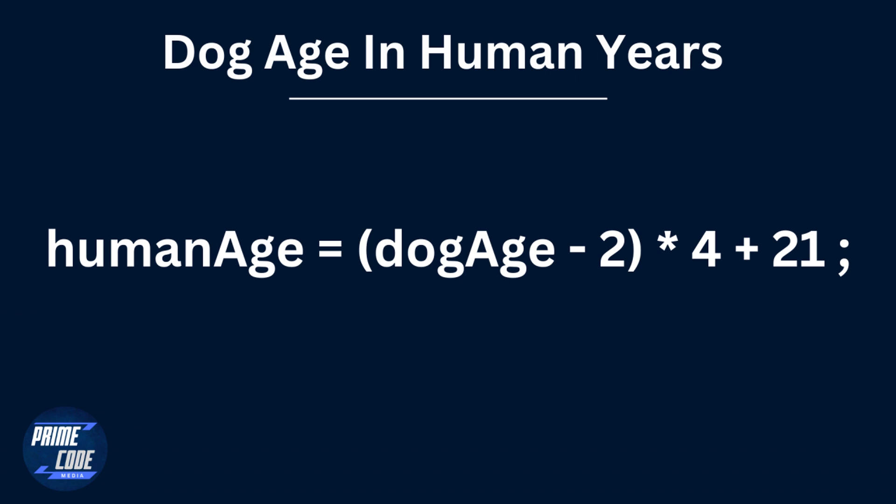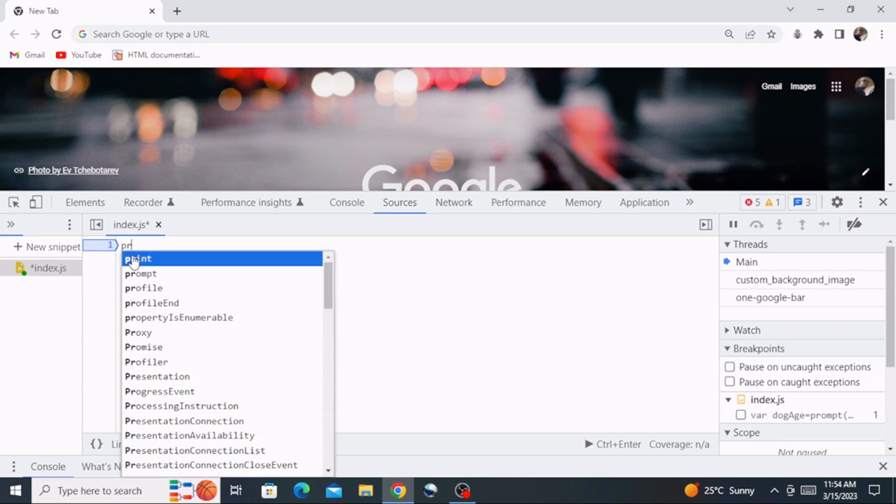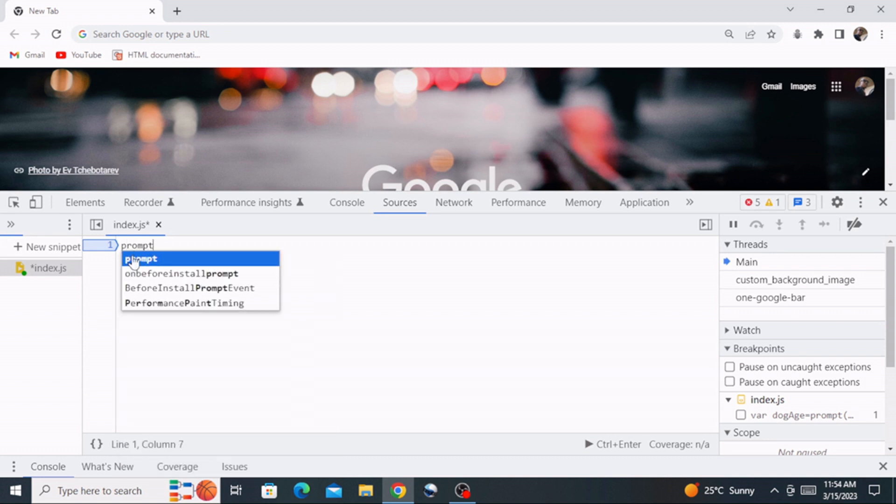Well done if you've done it. If you didn't, it's okay, let's go through it together. Now the first thing that I'm going to do here inside the Chrome developer tools, inside my snippet, I'm going to create a prompt. And then this prompt is going to ask the user to give us the age of their dog. So we will ask them how old is your dog? This is what we will be asking the user. And then what we will do is we are going to tie this prompt to a variable. So I'm going to say var dog age will be equal to whatever will be provided by the user.